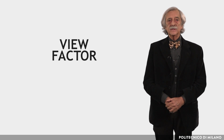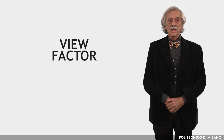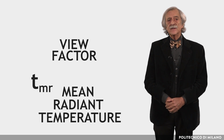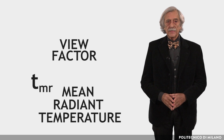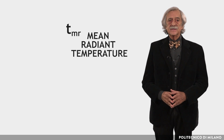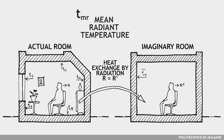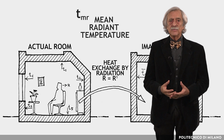Thus, with radiant heat, the apparent size of each radiating surface must be taken into account, not only its temperature. The apparent size is measured with the so-called view factor. In order to take into account this phenomenon in a synthetic way, a specific index — the mean radiant temperature — was introduced. The mean radiant temperature is defined as the uniform temperature of an imaginary enclosure in which the radiant heat transfer from the human body is equal to the radiant heat transfer in the actual non-uniform enclosure.